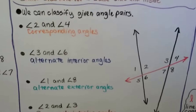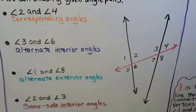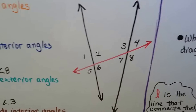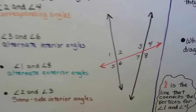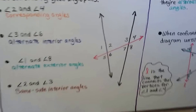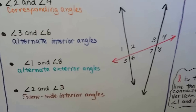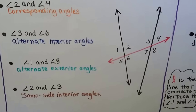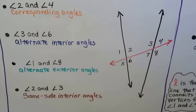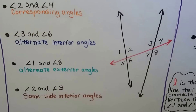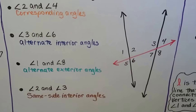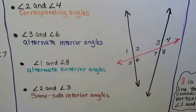We can classify given pairs: angles 2 and 4 are corresponding angles — they're on the same side of the transversal and both to the right of the lines. Angles 3 and 6 are alternate interior angles — both inside the lines on opposite sides of the red transversal. Angles 1 and 8 are alternate exterior angles — on opposite sides of the red transversal and outside the lines. Angles 2 and 3 are same-side interior angles — on the same side of the red transversal but inside the two black lines.